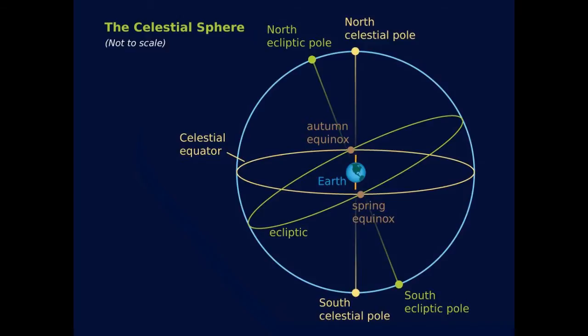The vernal equinox is located in the constellation Pisces. At the autumnal equinox, the sun crosses the celestial equator going south, marking the beginning of fall or spring in the northern or southern hemispheres.